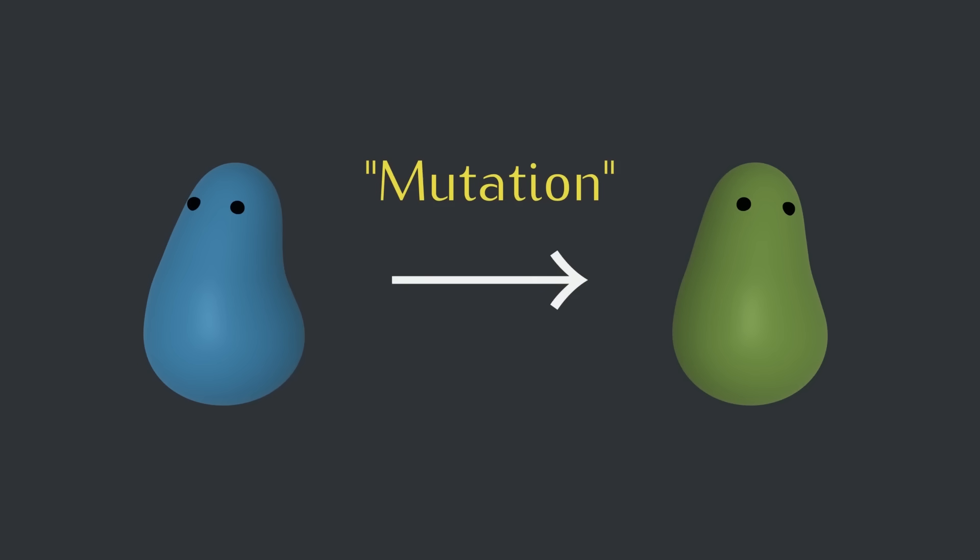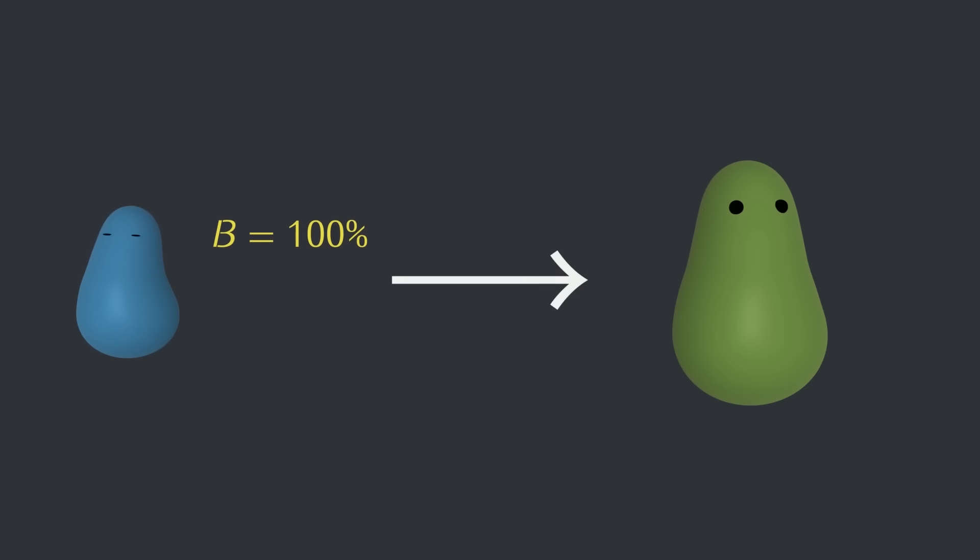Whatever's different about that kind of creature, color in this case, will likely have some effect on the statistics of that creature. The blue kind of creature has a spontaneous birth chance of 1, which means that every time step in the simulation, one of them will appear. And each time step, each blue creature has a 10% chance of dying and a 5% chance of replicating.